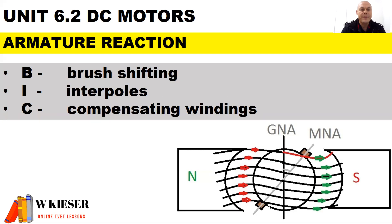Three methods to overcome the effects of armature reaction and we use the letters BIC to help us remember. For a generator we will shift the brushes forward and for a motor we will shift the brushes backwards.